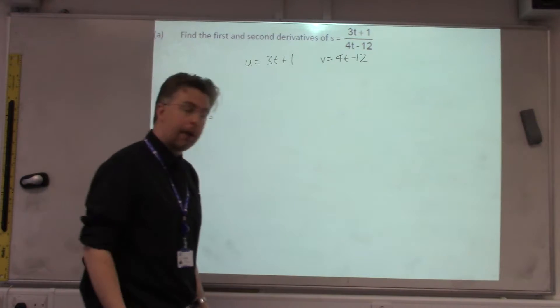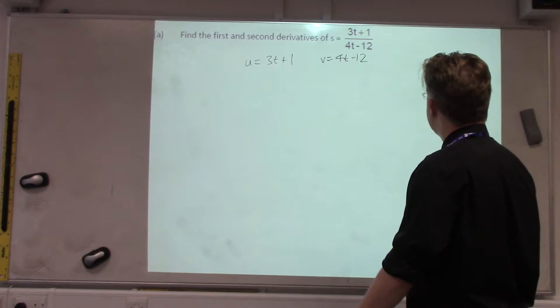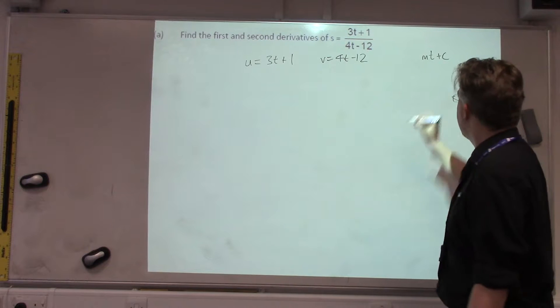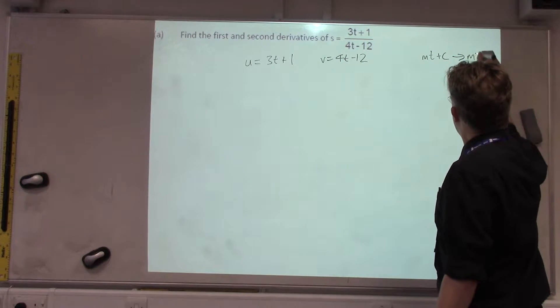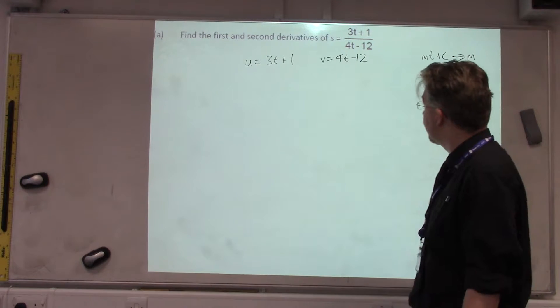Then, we need to differentiate both of those. It's very similar to the Product Rule, just a different formula to stick it in. So, in this case, we need to be able to differentiate MT plus C functions. When they differentiate, you just get the number in front of the T, which is the M.